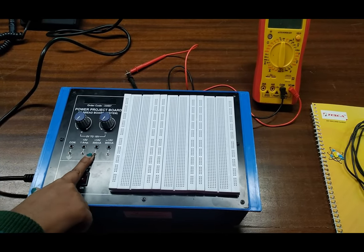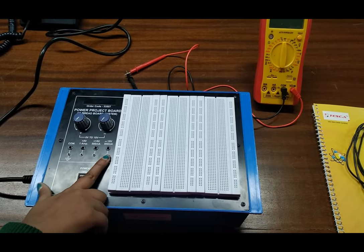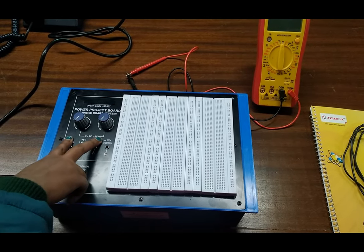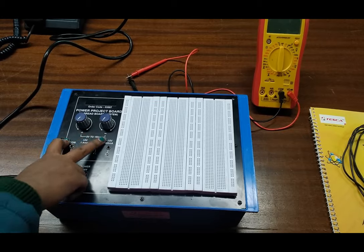This is plus 5 volt, this is plus 15, 0 to 15 volt, and this is 0 to minus 15 volt. With the help of these two knobs we can vary 0 to 15 volt and 0 to minus 15 volt.